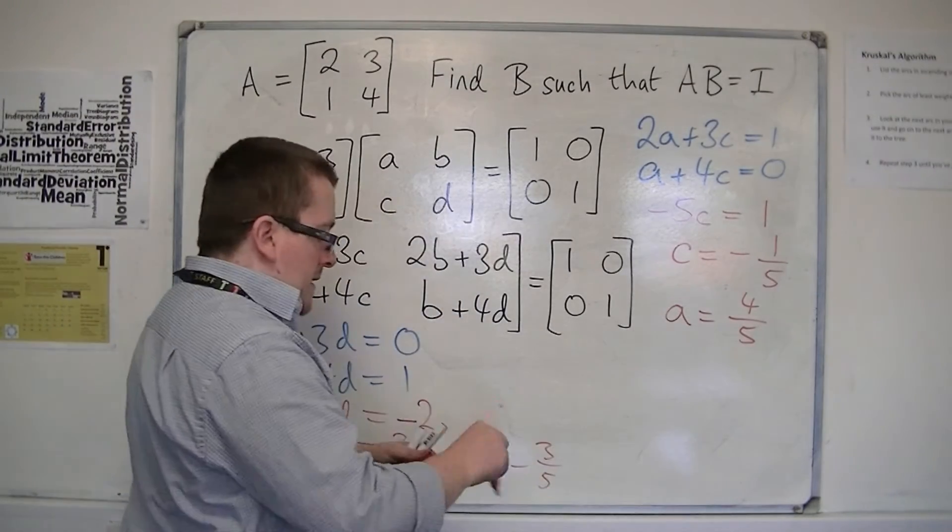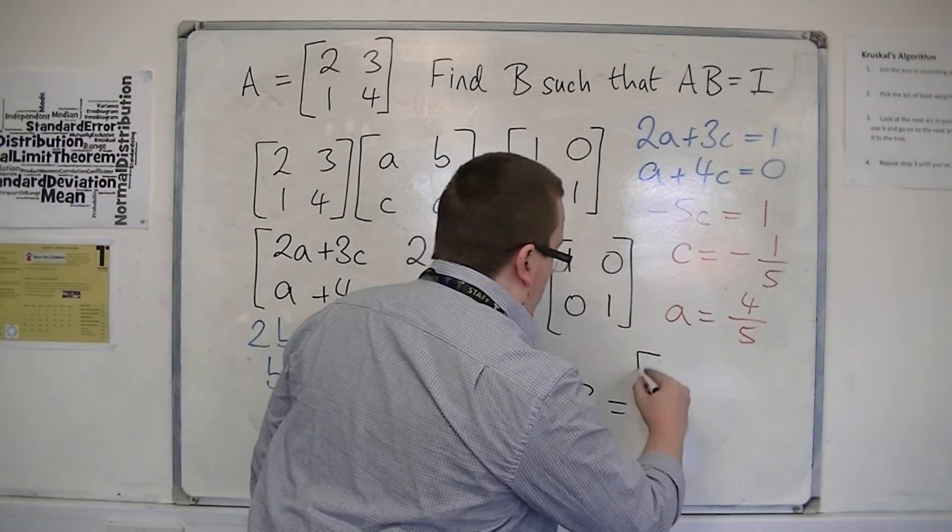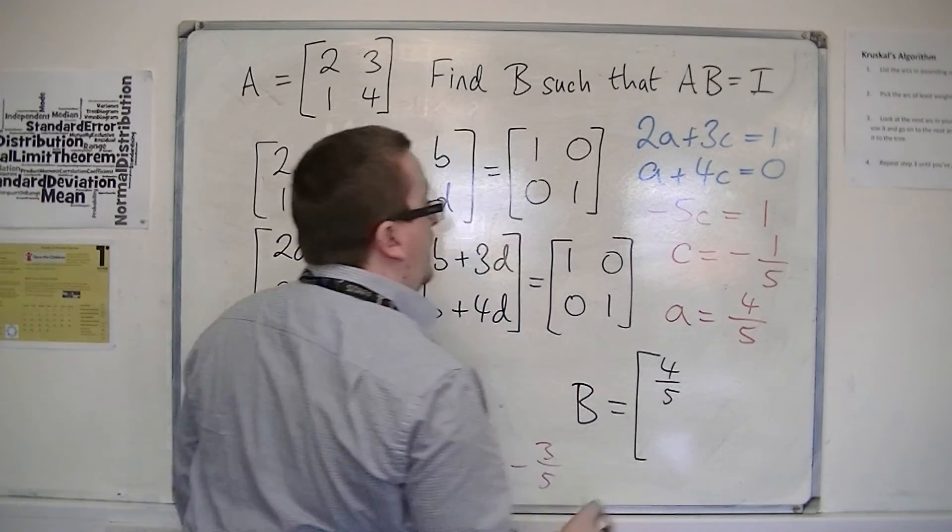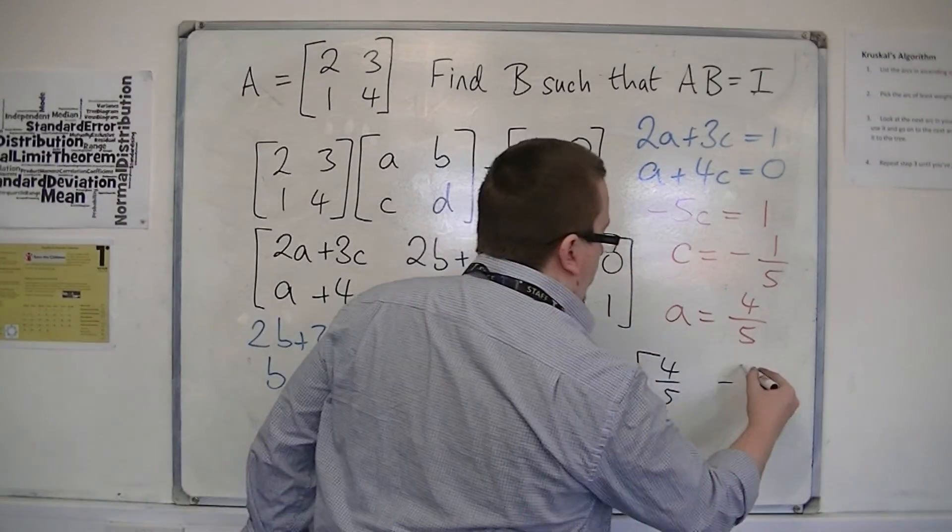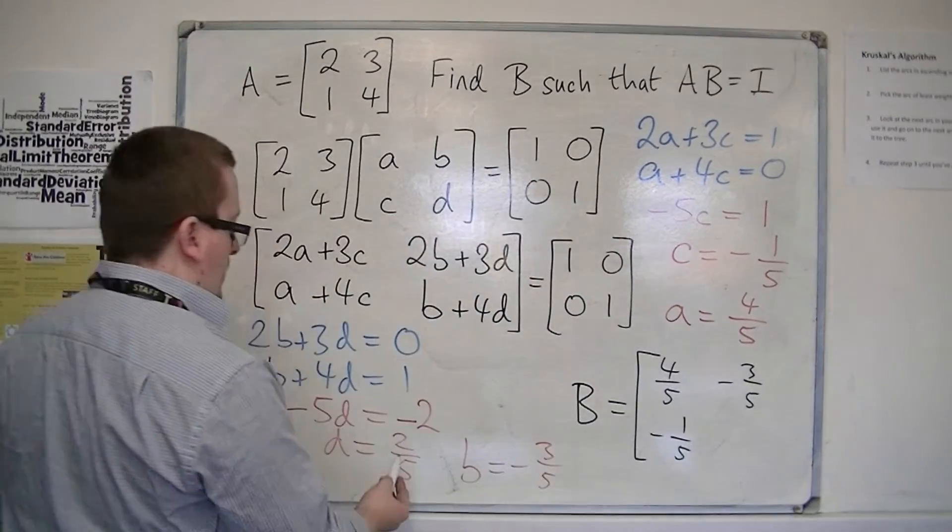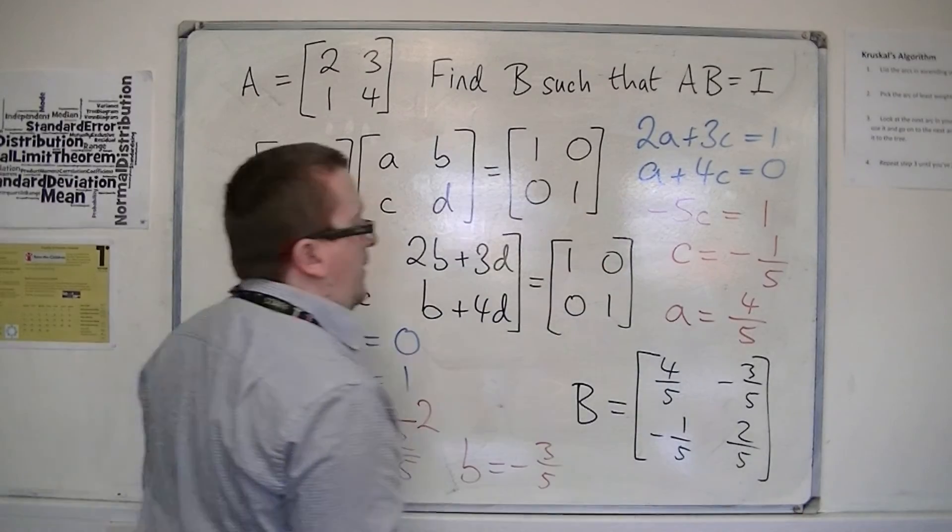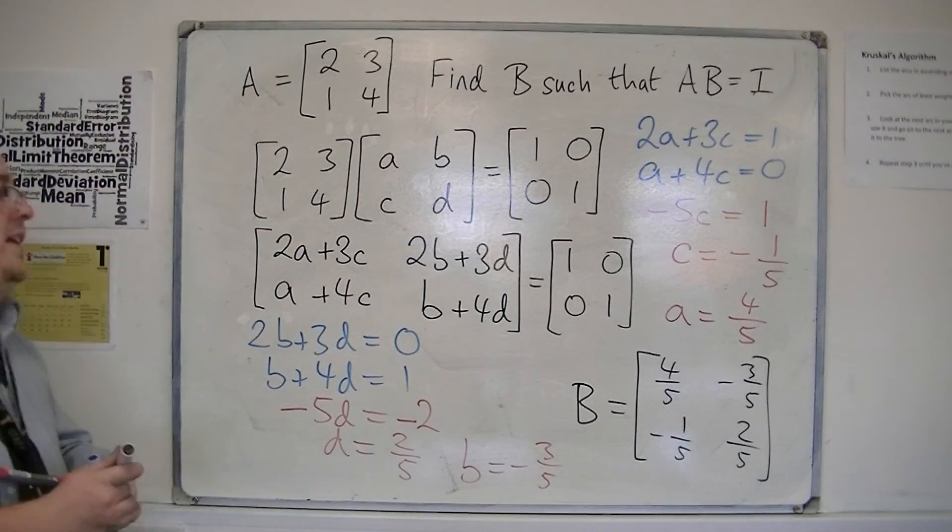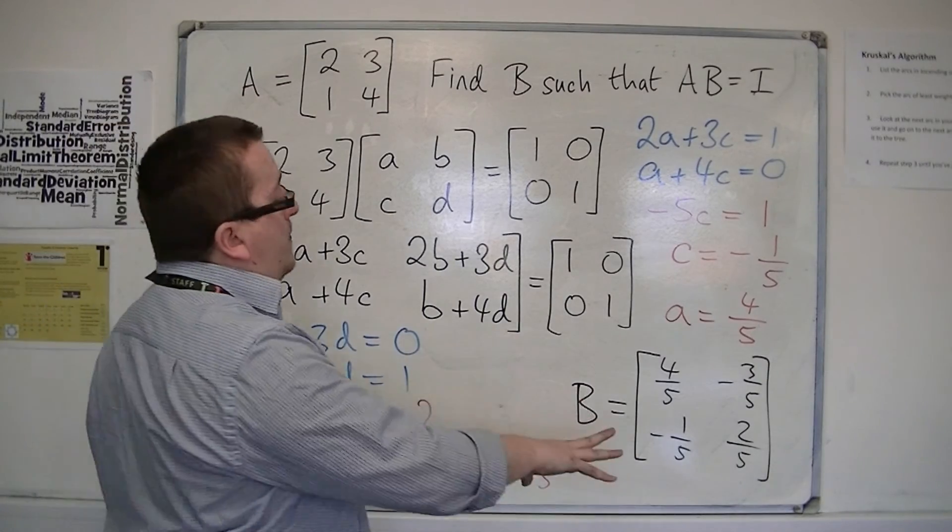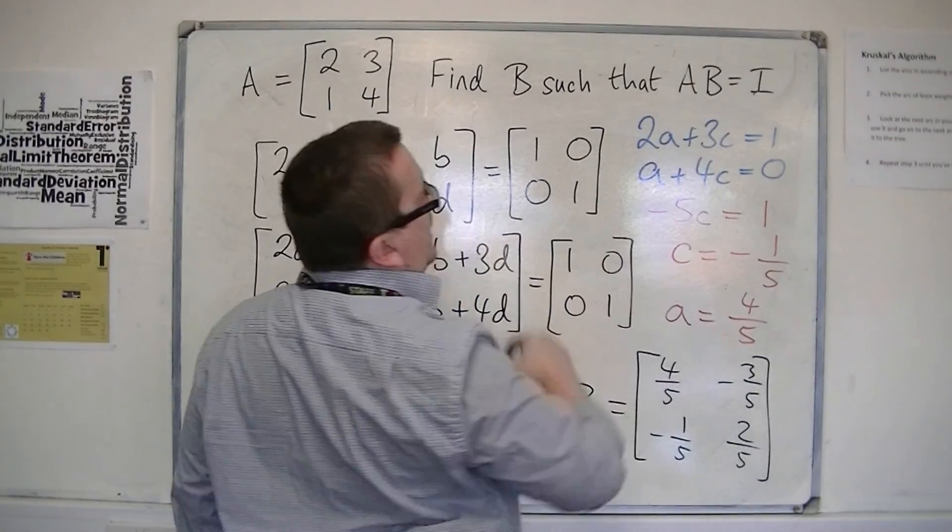So B, the matrix B, must be equal to [4/5, -3/5; -1/5, 2/5]. So that's how we can use a little bit of algebra to work out the missing matrix that will allow me to multiply this matrix by that one to get the identity.